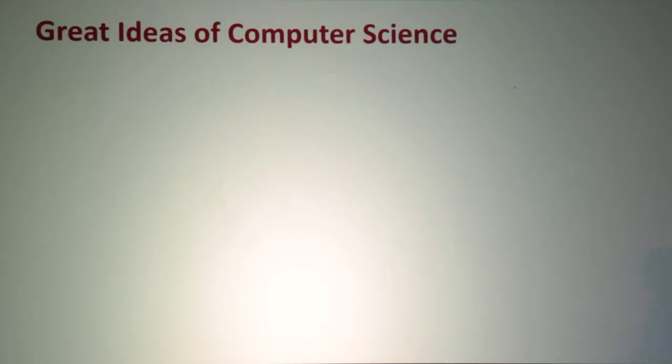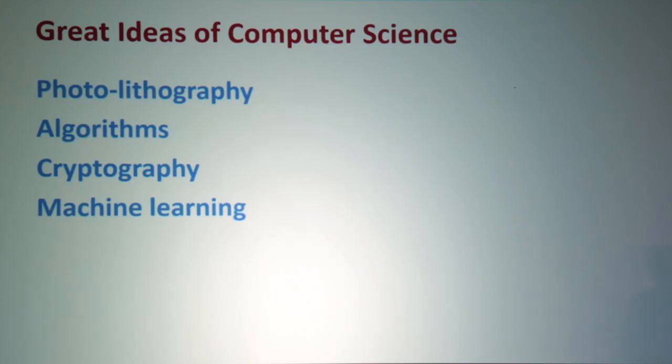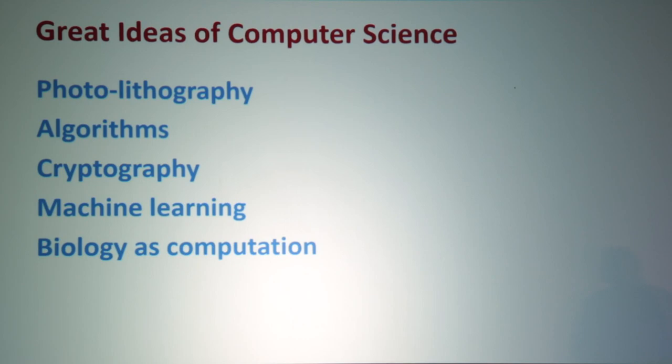Just to summarize: my five great ideas of computer science are the following. Photolithography, whereby we can make billions of transistors all at the same time very cheaply. Algorithms — the idea that a computer follows a sequence of steps, and by doing thousands of millions of steps per second, can perform all sorts of miracles. Cryptography — critical to the internet age — the idea that we can send secret information over the internet even though people can intercept the messages on the way. Machine learning — perhaps the biggest frontier of computer science today — where instead of programming computers to solve problems, we program them to learn for themselves. And finally, a fledgling field in its infancy: viewing biology as computation. Thank you very much.